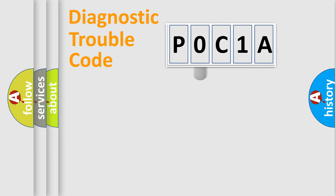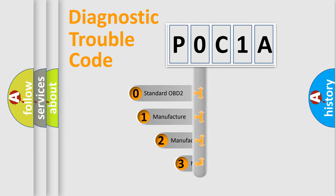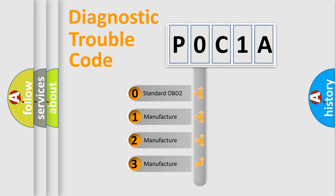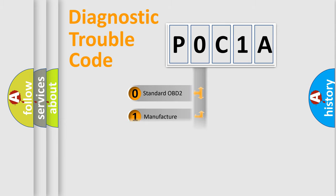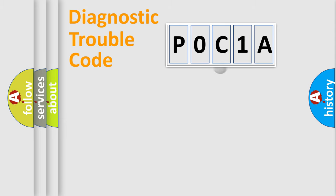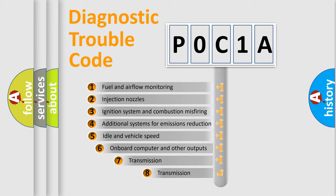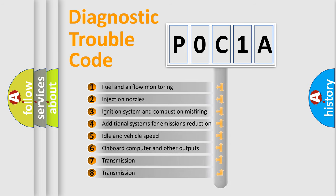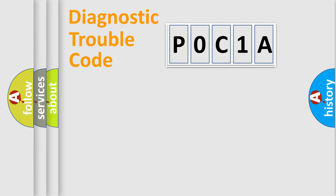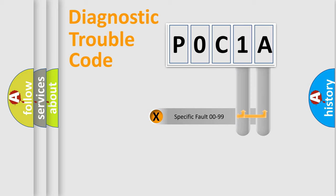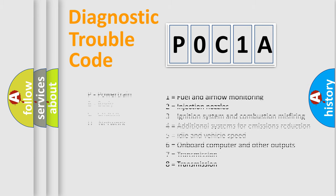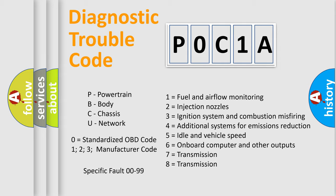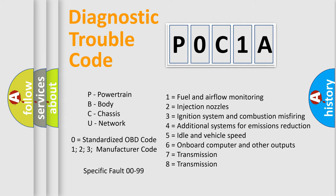This distribution is defined in the first character of the code. If the second character is expressed as zero, it is a standardized error. In the case of numbers 1, 2, or 3, it is a manufacturer-specific error expression. The third character specifies a subset of errors. This distribution is valid only for the standardized DTC code, and only the last two characters define the specific fault of the group. Note that such a division is valid only if the second character is expressed by the number zero.